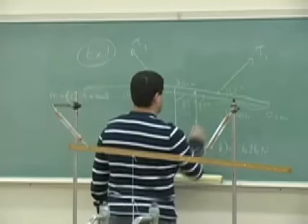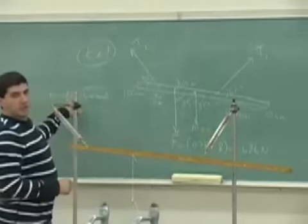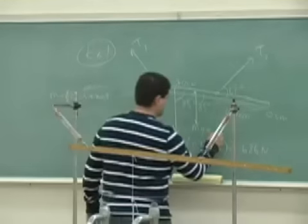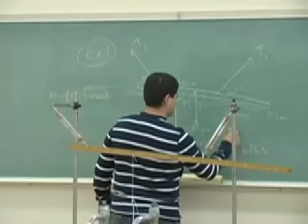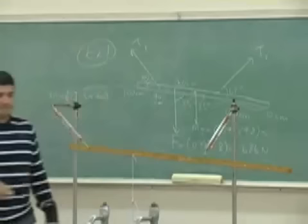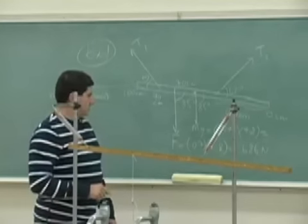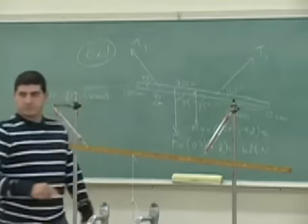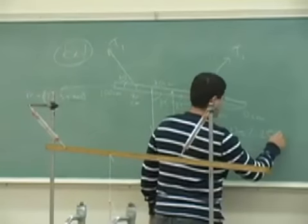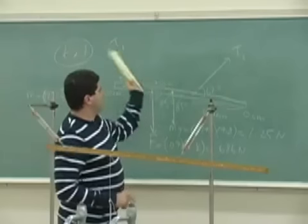So that's going to be equal to, change the 127 grams to kilogram, 0.1273, times 9.8. 1.25, 1.25 newtons. Okay, now I want you to solve then for T1, T2, and theta.